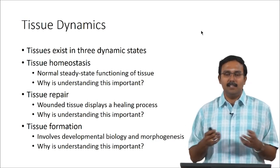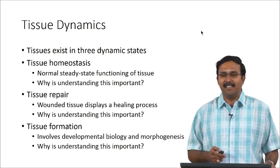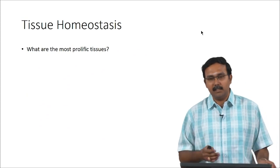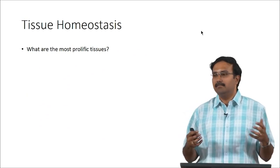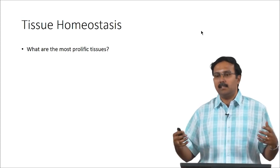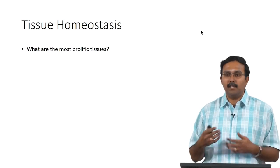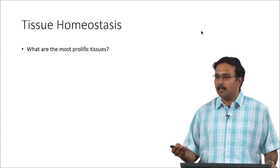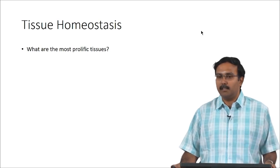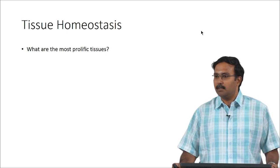Those are the three dynamic states of tissue. When talking about tissue homeostasis, some tissues remain homeostatic for a long period, while others are quite prolific and keep getting replenished regularly. The most prolific tissues in the body include skin as one of the most prolific.